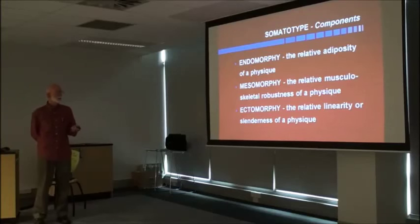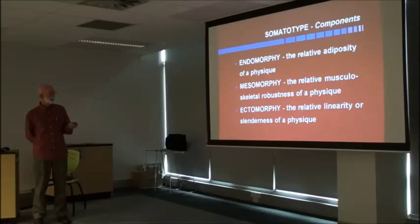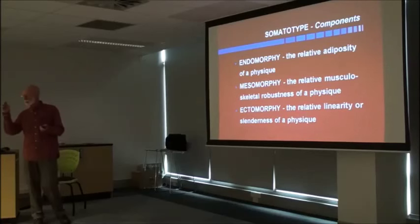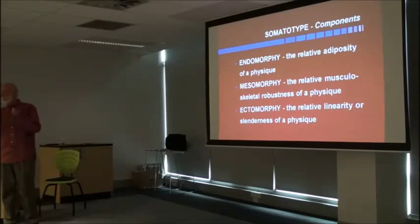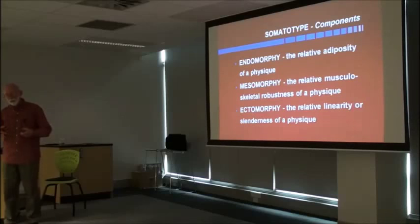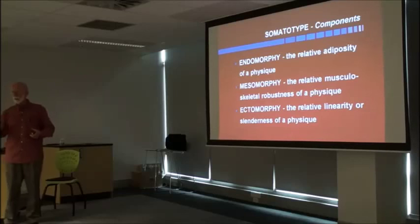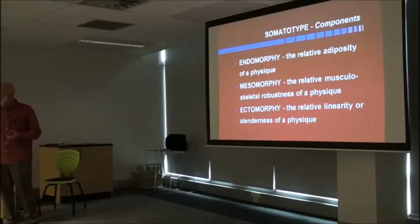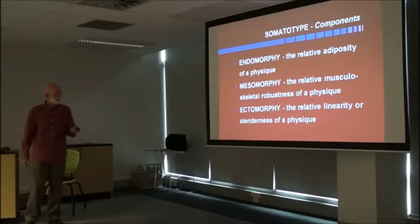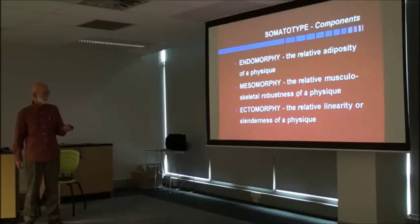The first thing you have to get in your mind is that it is a gestalt, or an overall view of the physique. Relative adiposity, musculoskeletal robustness, and linearity. So, when thinking of the physique in those simple words, it is based on the anatomical model of body composition. So, we're not talking about cells here, we're talking about what you can see if you dissect the body, the basic anatomy.